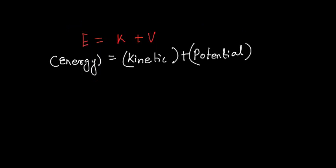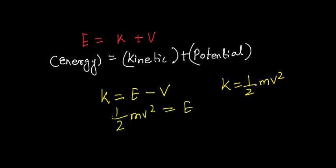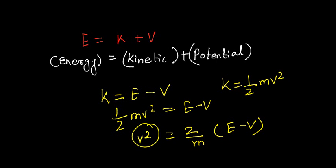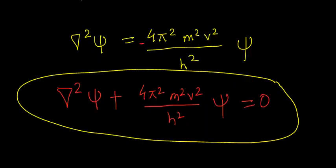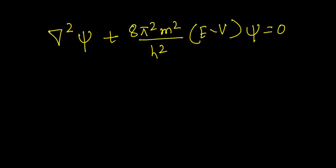From the relation E equals K plus V — that is, total energy equals kinetic plus potential energy — we can write kinetic energy as E minus V. Since K is also written as half mv², we have half mv² equals E minus V, therefore v² equals 2(E minus V) divided by m. Substituting v² into our equation gives the following relation.